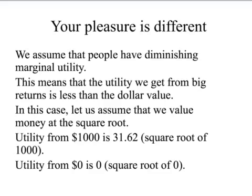This is different from the pleasure you get from success or failure. We've established that, apart from things like cocaine, people have diminishing marginal utility, which means that the utility they're going to get from the big return is less than the dollar value. You go from $500 to $1,000 — you're doubling the money, but you're not doubling the amount of happiness you get.